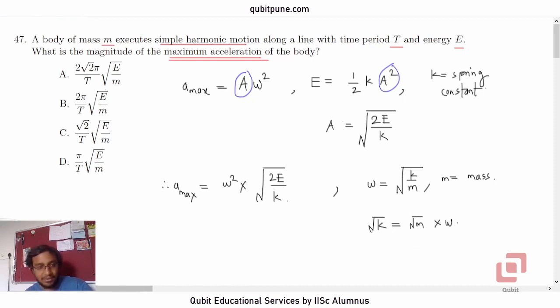So, this root K now, which is here in the denominator, should be replaced by root of M into omega. Note that omega here in the root K's expression is outside the root. And it is in the denominator. So, it will be omega squared into root of 2E divided by root of M into omega. Omega, omega will get cancelled.